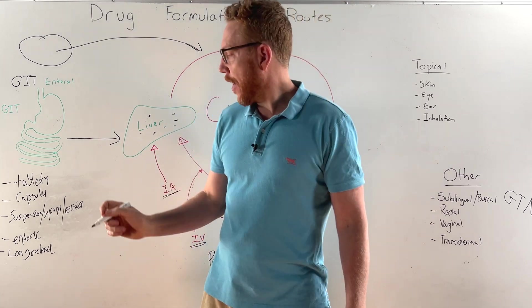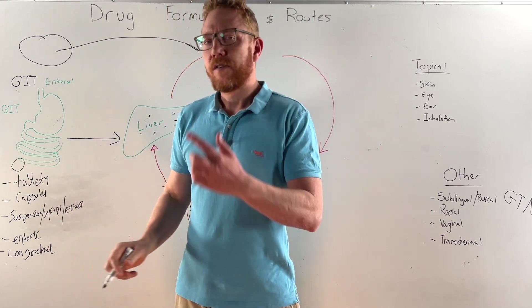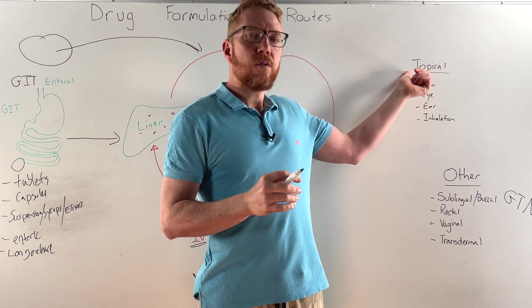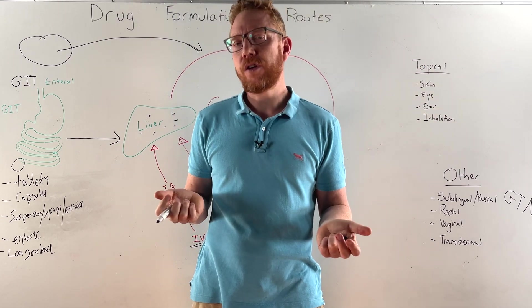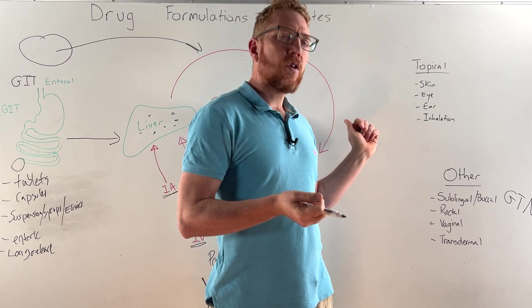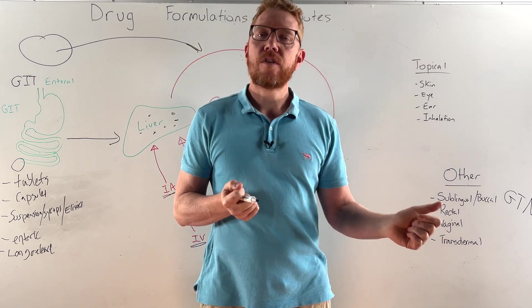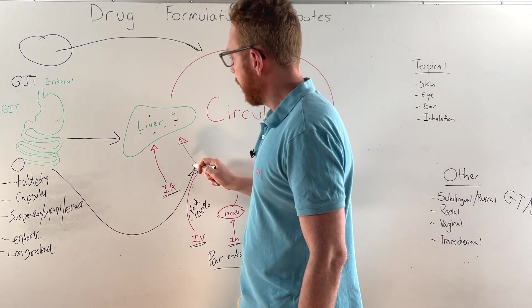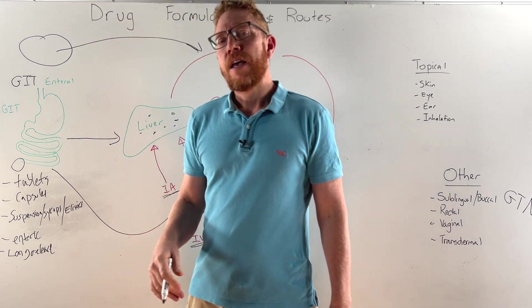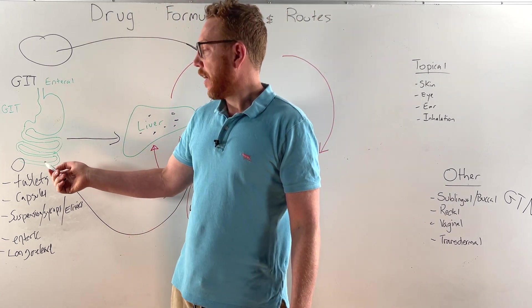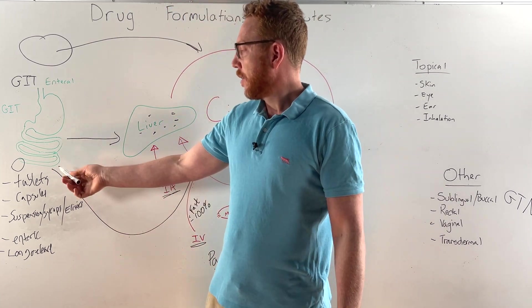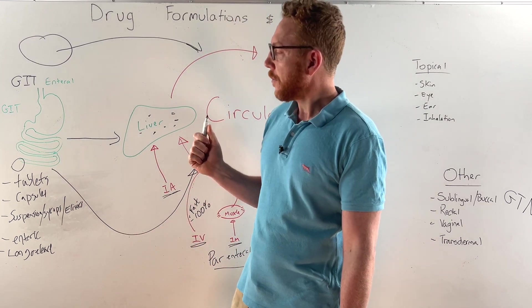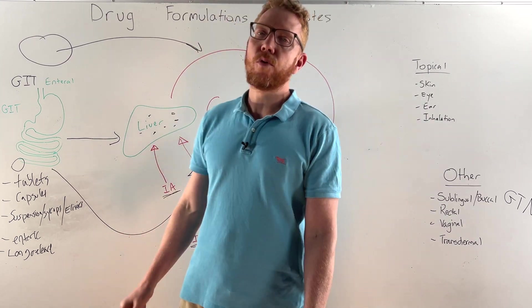When we look at rectally, this is at the other end of the digestive tract. This could be applied as a suppository in a topical manner which could help with constipation, or it could be absorbed across the mucosa of the rectum and put straight into the circulation bypassing the liver. Certain things like anti-epileptic medication or pain medication can be taken per rectally and would absorb into the circulation and bypass the portal system.